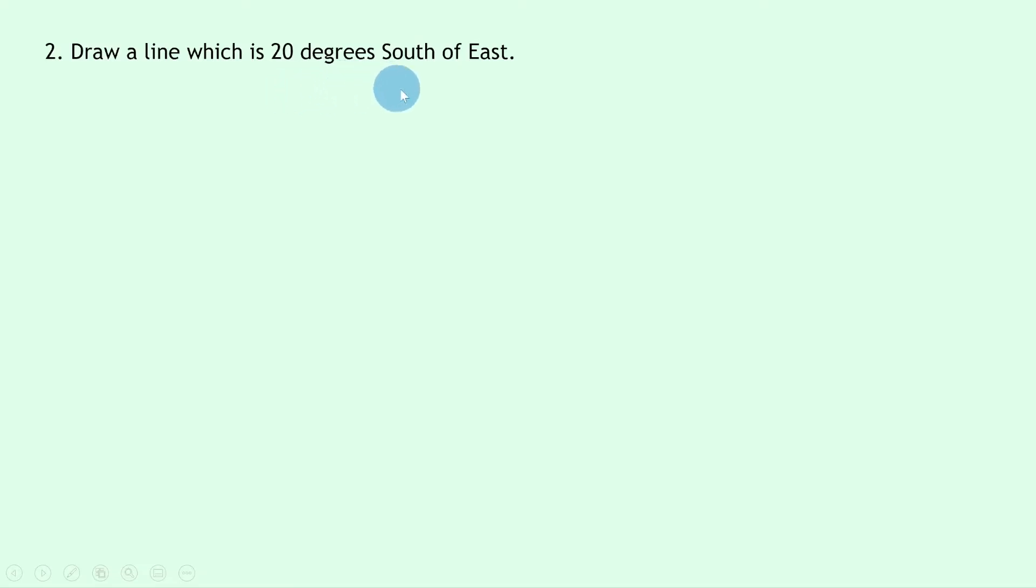Question two says to draw a line which is 20 degrees south of east. Just like in question one, we'll draw a diagram and then we'll label north, east, south, and west.